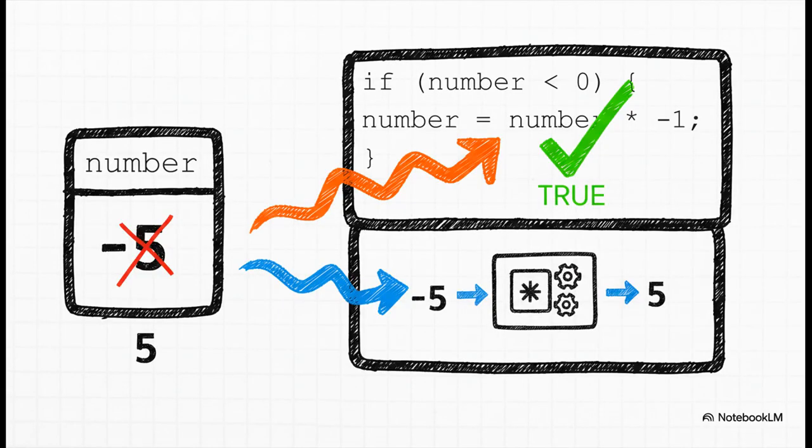Okay, let's see this in the wild. We've got a variable here called number, and we set it to negative five. The if statement then asks the question, is the number less than zero? Well, yeah, negative five is definitely less than zero, so the condition is true. And because it's true, the code inside those curly braces runs, flipping our number from negative five to a positive five. So simple, but so powerful.